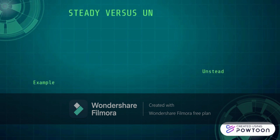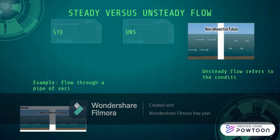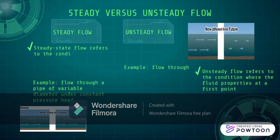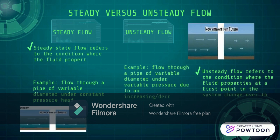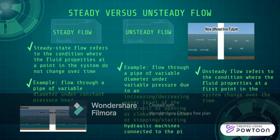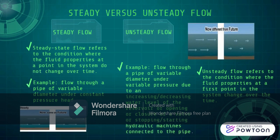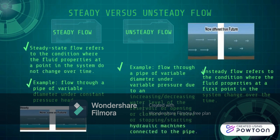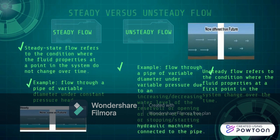Steady versus unsteady flow. As shown in the diagram, here is how steady and unsteady flow differ. Steady flow refers to the condition where the fluid properties at a point in the system do not change over time. An example of steady flow is flow through a pipe of variable diameter under a constant pressure head. Unsteady flow is the opposite — it refers to the condition where the fluid properties at a point in the system change over time. An example of unsteady flow is flow through a pipe of variable diameter under variable pressure due to an increasing or decreasing water level in a reservoir, or the opening or closure of a valve, or starting or stopping hydraulic machines connected to the pipe.